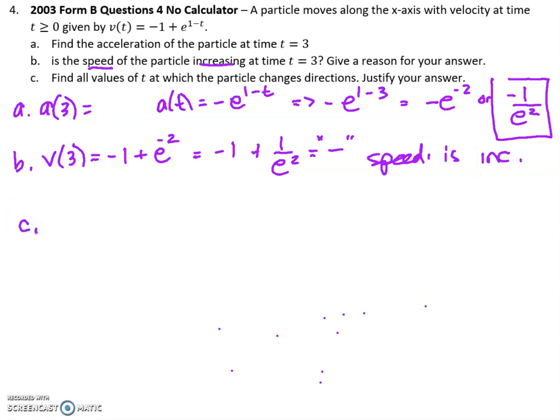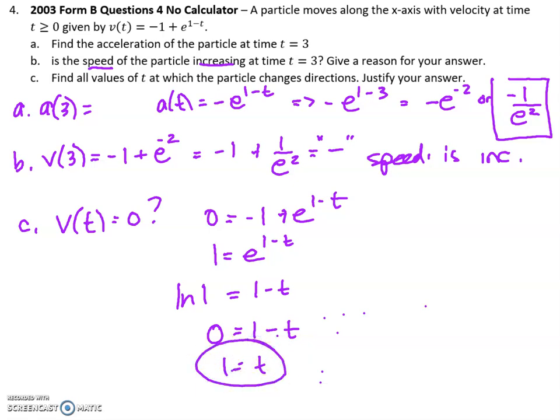For part c, find all values of t at which the particle changes directions. Changing directions means that you're looking for when the derivative is 0. This is no calculator, so I'll have to set the derivative equal to 0 by myself. I'm going to bring that 1 over. How do you get rid of e? Natural log both sides. So I have natural log of 1 equals, that would cancel out the e. This is 0. So t is 1. So at time t equals 1 is when my particle should change directions. I could really make sure that it does, in fact, change directions by plotting 1 and testing the interval. Like I could plug in 0 to this. If I plug in 0, I get something that is positive. And then on the other side, when I plug in something bigger, I get something that's negative. So it does, in fact, change directions.